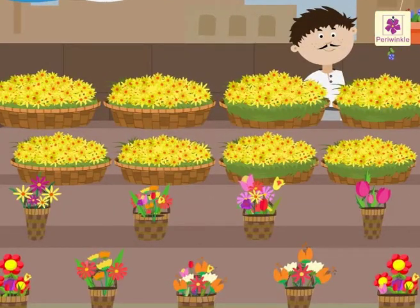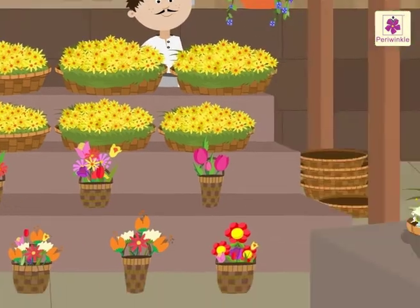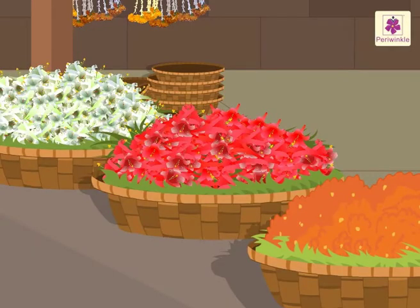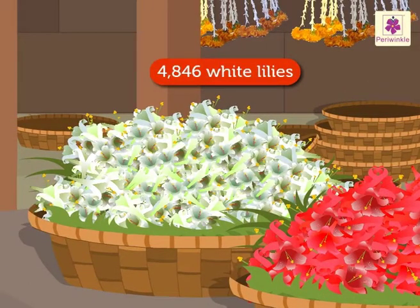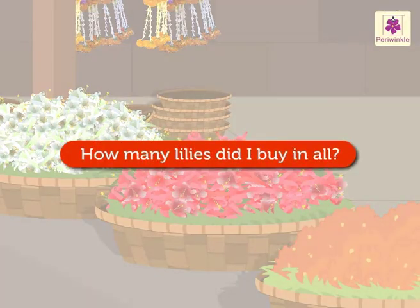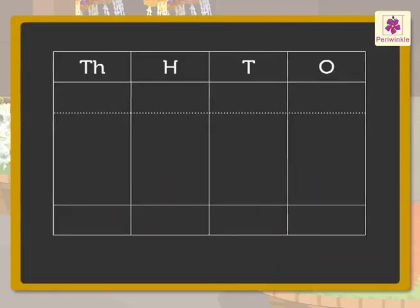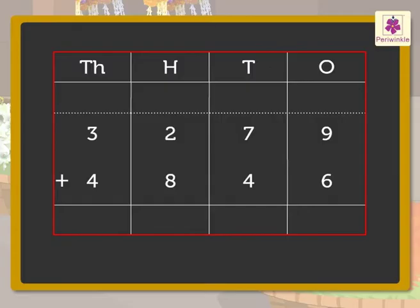Why not buy some of them? I forgot I had come to buy some lilies too. I bought three thousand two hundred seventy-nine red lilies and four thousand eight hundred forty-six white lilies. How many lilies did I buy in all? Let us write the numbers three thousand two hundred seventy-nine and four thousand eight hundred forty-six in the place value chart.